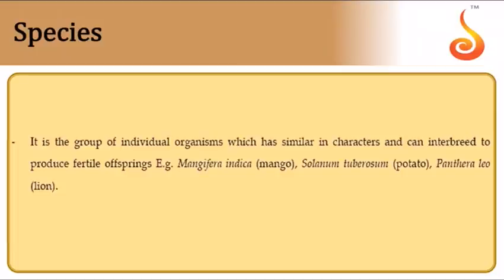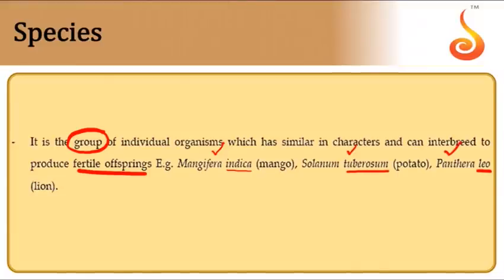A species is defined as a group of individual organisms capable of interbreeding and producing fertile offspring. Examples: Mangifera indica (indica is the species), Solanum tuberosum (tuberosum is the species), Panthera leo (leo is the species). The second name is the species epithet or specific name and always starts with a small letter.